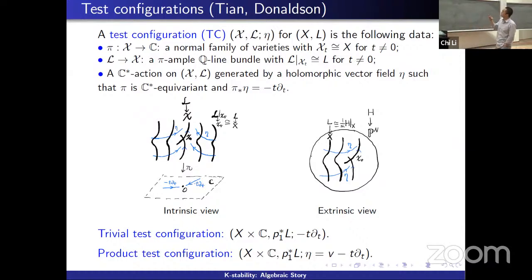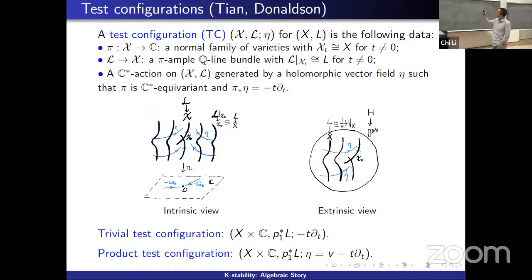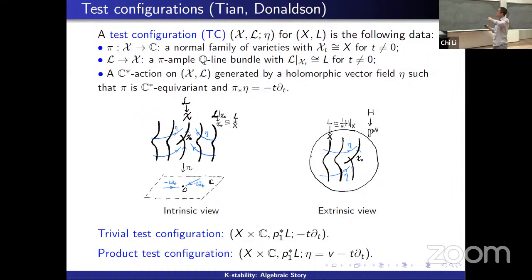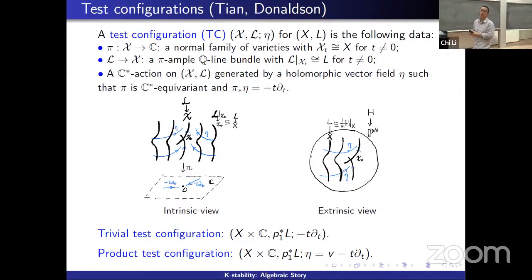Another helpful way to think about test configurations is the extrinsic view: since L is ample, we can embed X into projective space, then choose a one-parameter subgroup in the group of projective transformations generated by the vector field eta and move X inside P^N. By compactness of the Hilbert scheme, in the limit we get a limiting variety X_0. We collect all these images together to form the total space, and pull back the hyperplane bundle to get the line bundle L. So these are two essentially equivalent ways to think about test configurations.